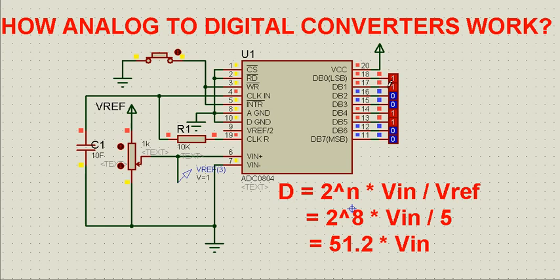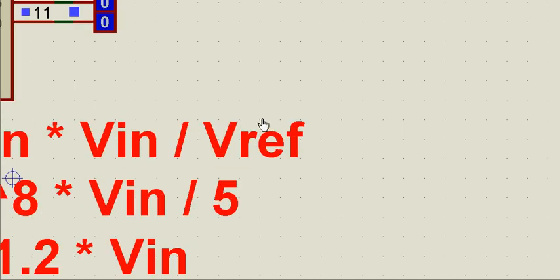N is the number of bits in the digital output code, which is also known as the resolution of this ADC. Vin is the input voltage, and Vref is the reference voltage, which is 5 in this case.